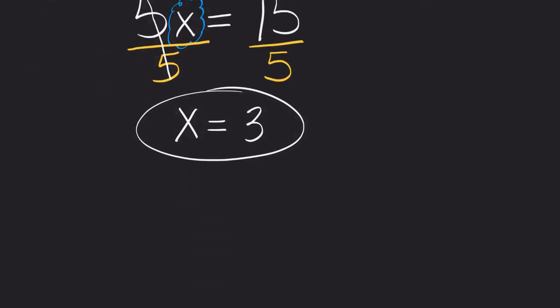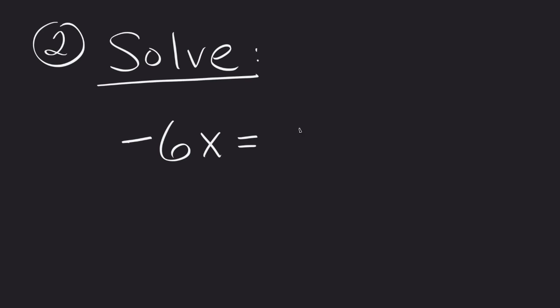Okay, so we can, though, however, use this for other problems. So it's possible that we may have something like solve negative 6x is equal to 24. Now, what am I going to divide by in this case? What number am I going to divide by to get x by itself? So first thing is find that x and figure out what we can do to get rid of that problem.